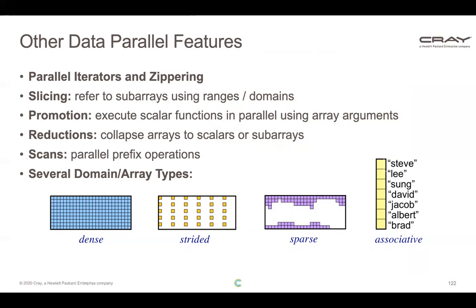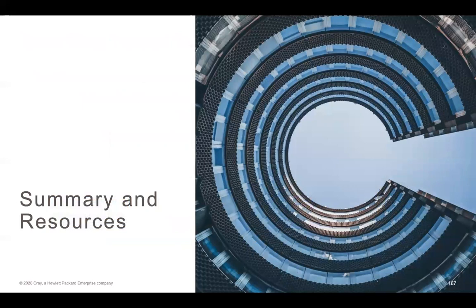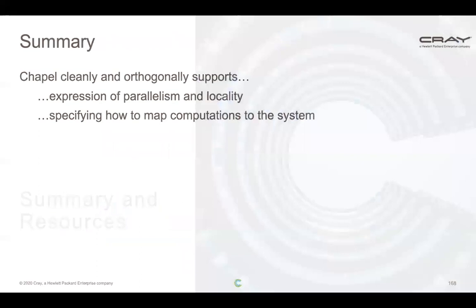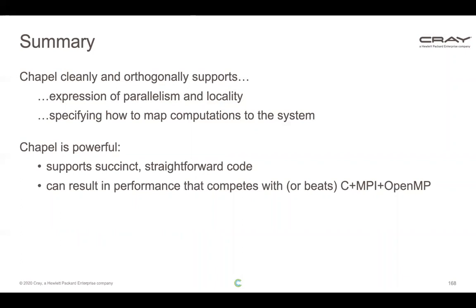To summarize: we believe Chapel cleanly and orthogonally supports expressing parallelism, locality, and how to map computations down to the system. Chapel is powerful — it supports very succinct and straightforward code that results in performance competing with or in some cases beating standard approaches like C plus MPI plus OpenMP, which is the de facto standard for high performance computing.